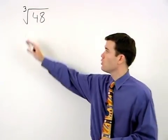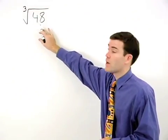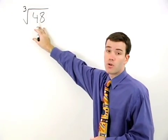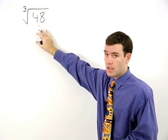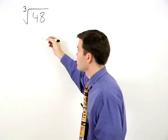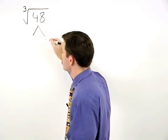To simplify a cube root where the number inside the radical is not a perfect cube, we start by making a factor tree for the number inside.